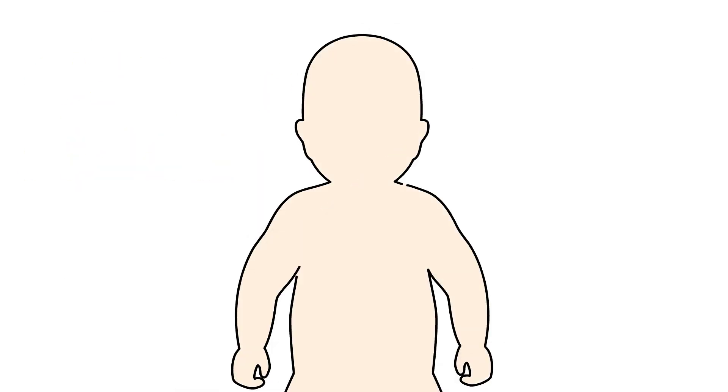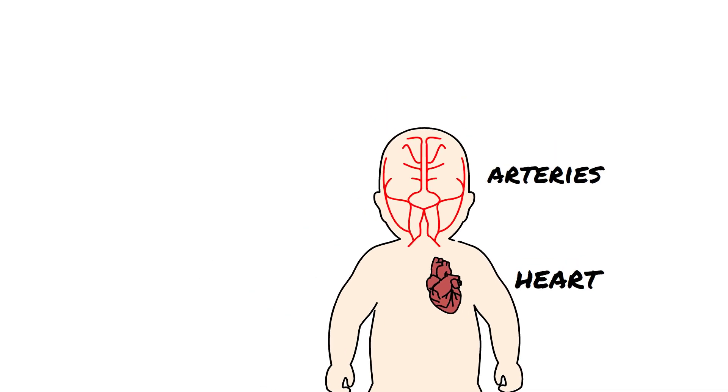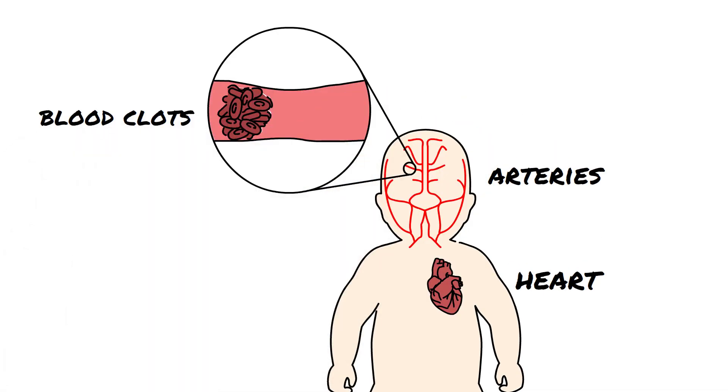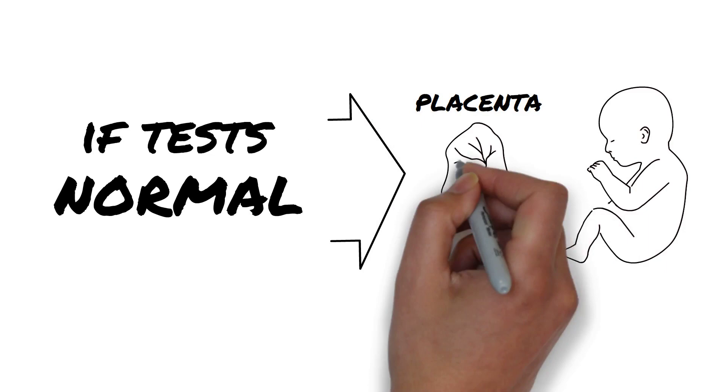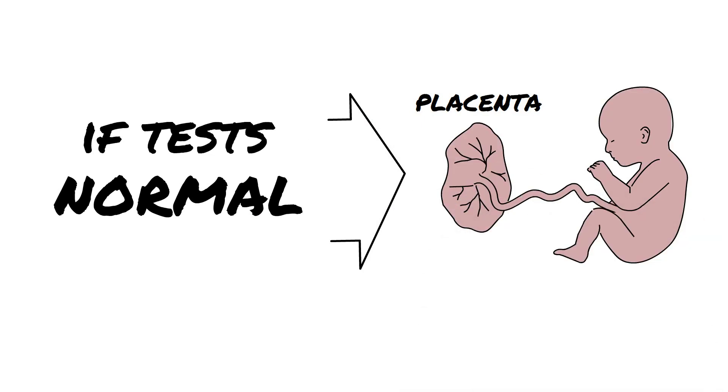In order to figure out why Kate had a stroke, the doctors looked at her heart and arteries and they tested her blood to look for clotting problems. If these tests are normal, the most likely explanation for the stroke is a clot that traveled from the mother's placenta through the heart and up to the baby's brain before, around or just after the time of birth.